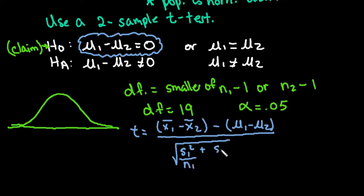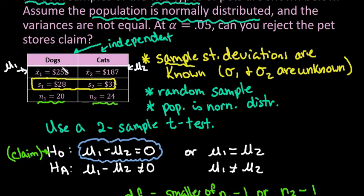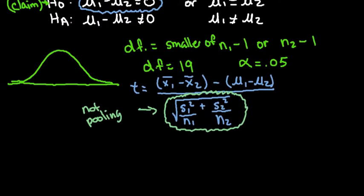Now let me address pooling versus not pooling. When you pool you use a different formula for the denominator. We are not pooling here because we don't know if the variances are equal. Unless you know that the variances between the two populations are equal, you do not want to pool. It's always safer not to pool because it can throw off your answer. If you have a choice, do not pool unless you know for a fact that the variances are equal.